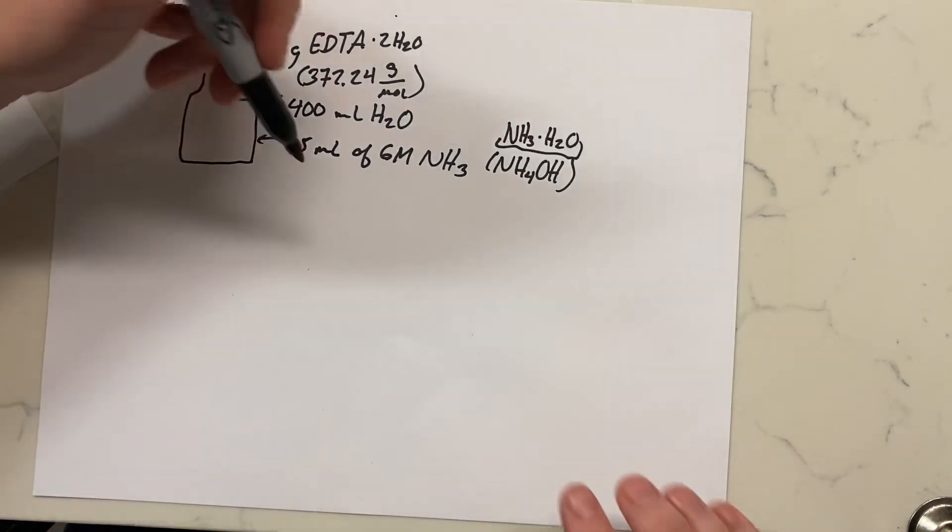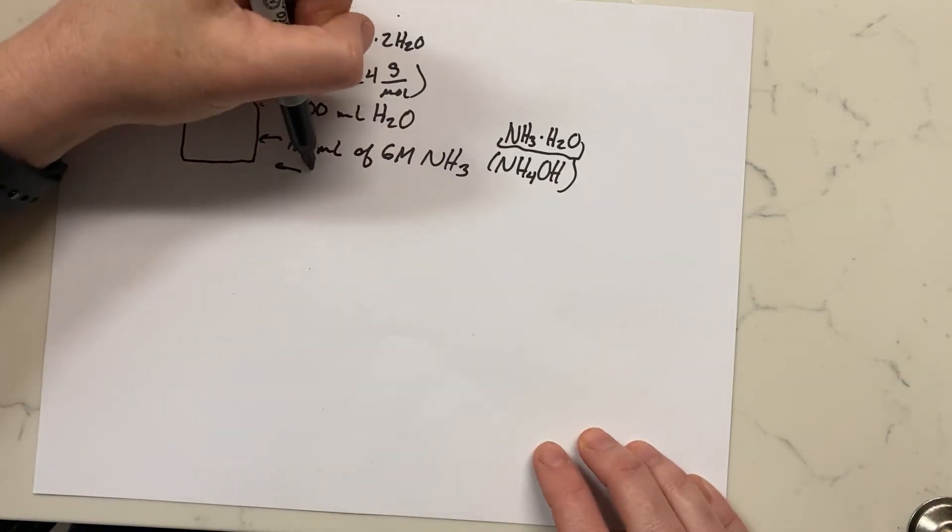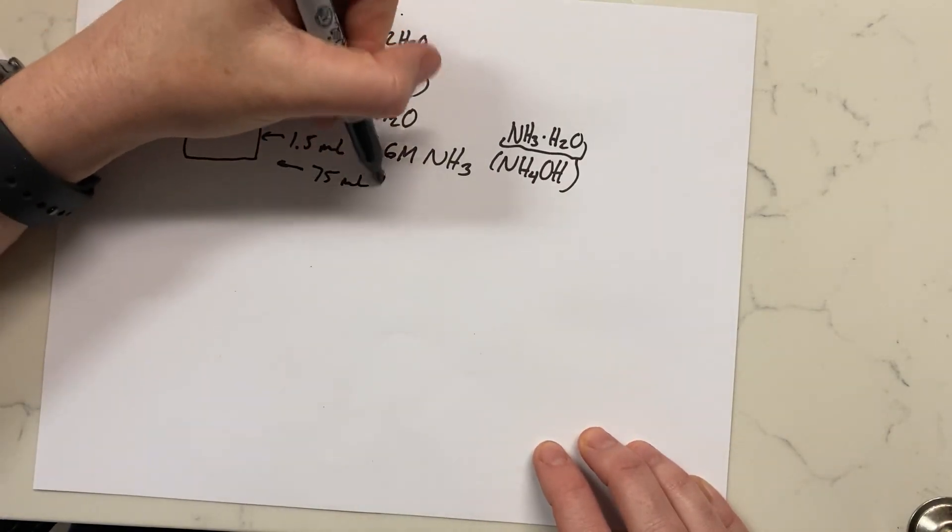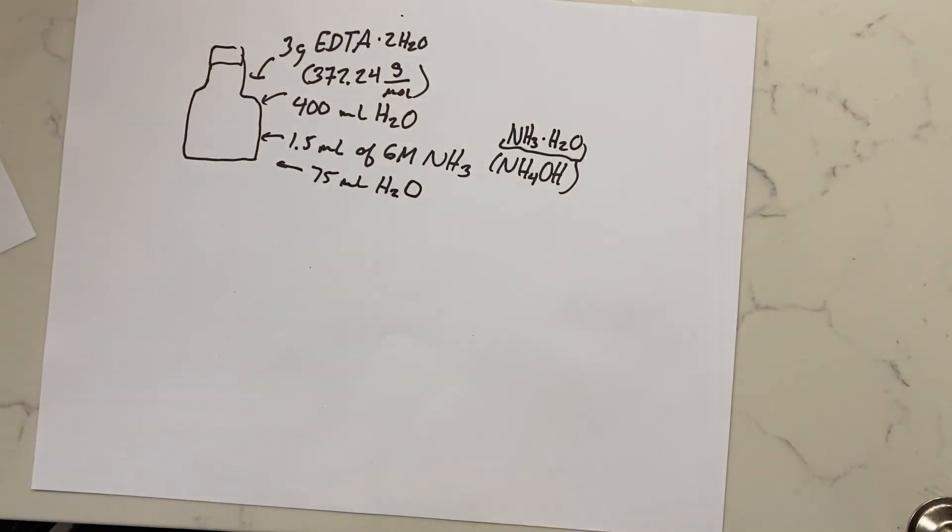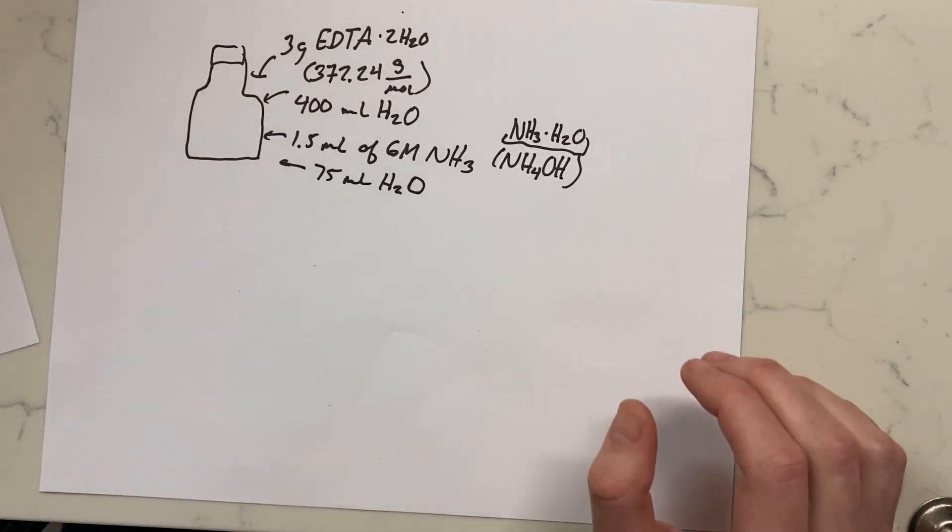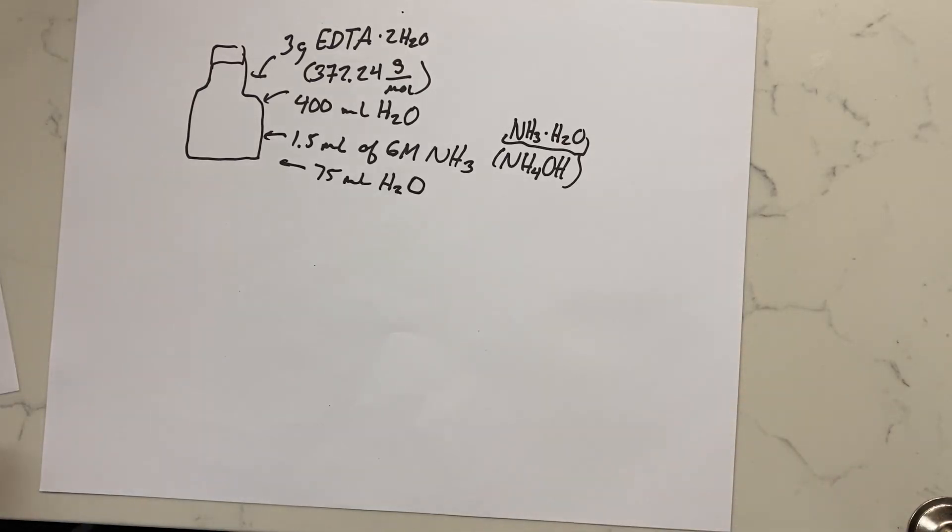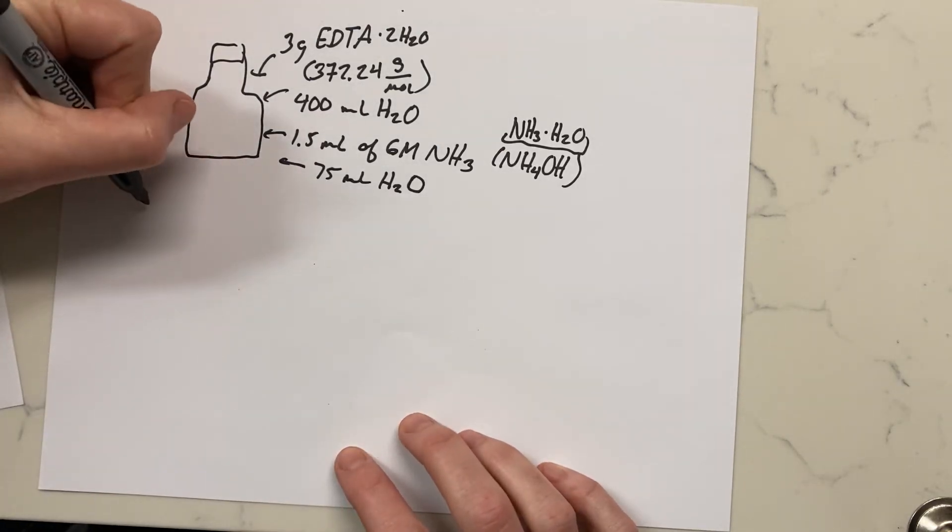And then we added an additional 75 milliliters of water. This created a nice high pH solution. If you look back at the charts, we needed something that was a pH of around 10, and that's what we end up getting here.